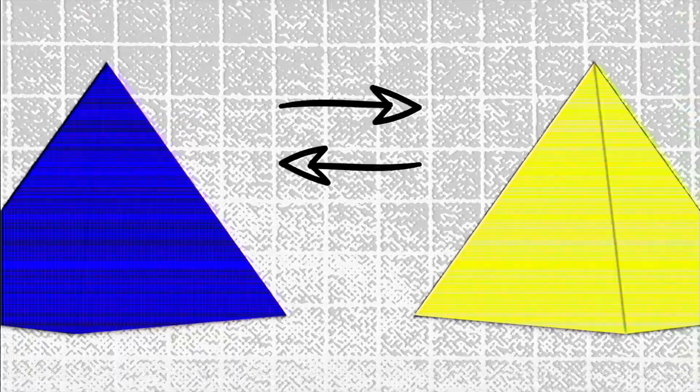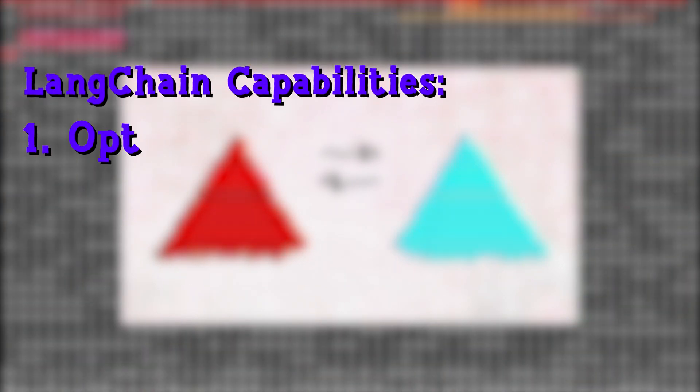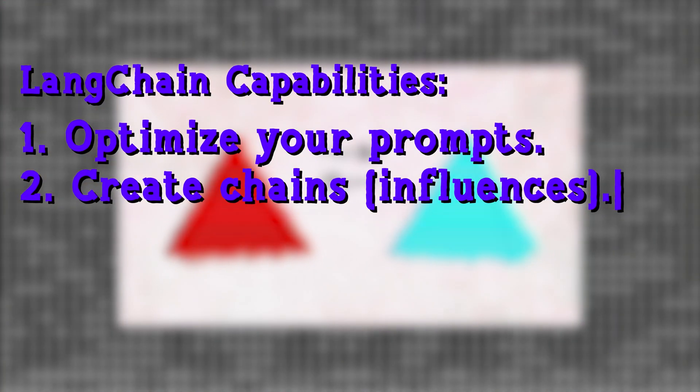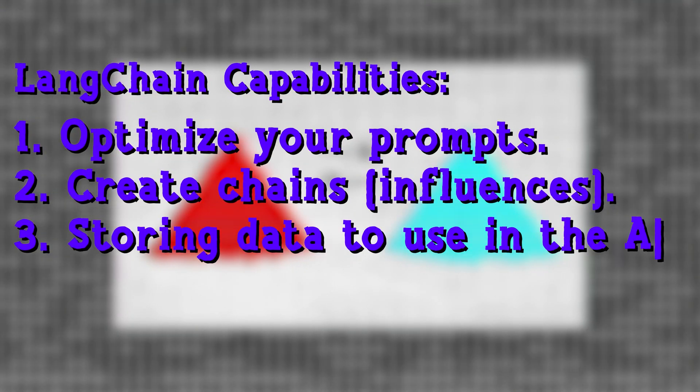Here's an easier way to explain it. We want AI models to use each other and talk to other data sources. This sounds extremely messy when you translate it into code. So Langchain provides an easy-to-use API to optimize your prompts, create chains so the result of one text generation influences the next, store your data to use in the AI, and most recently, agents. A lot of the tools in this video integrate easily within Langchain, so make sure you start off here.